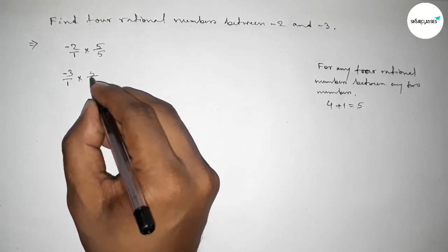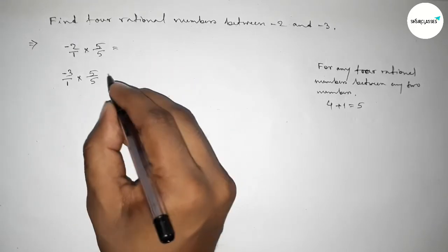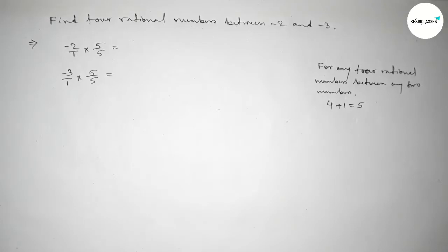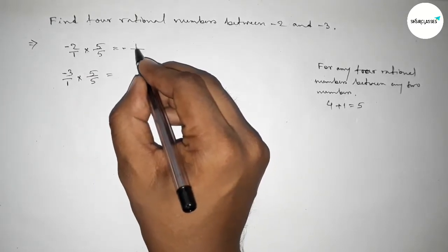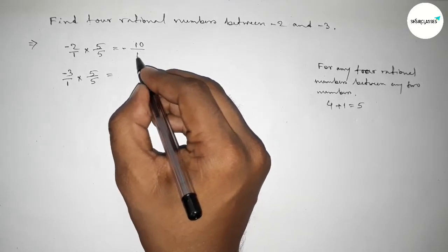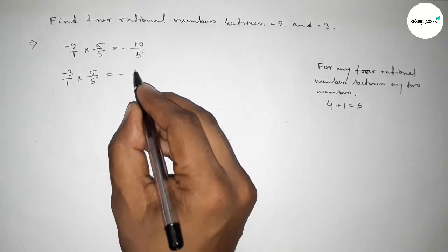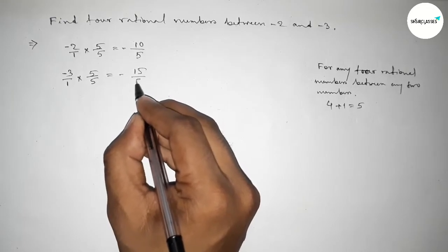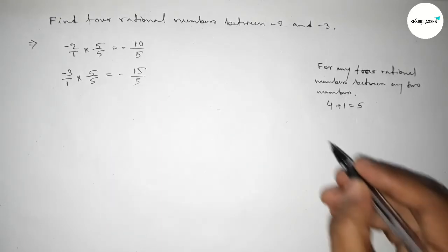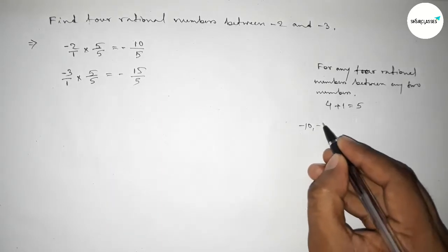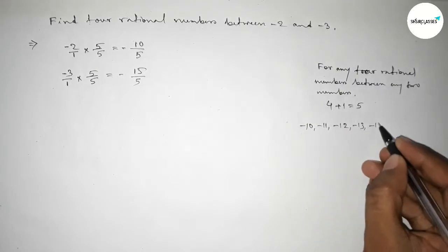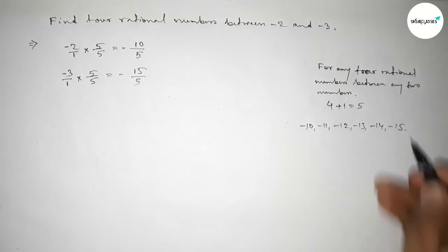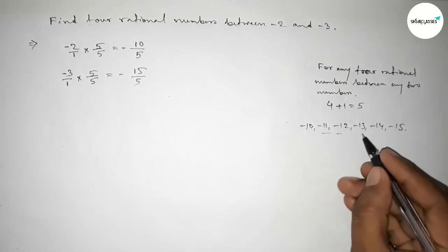So here minus 10 over 5 and here minus 15 over 5. Now between minus 10 to minus 15 we can get four negative integers. So write down here the negative integers. These are the four negative integers.